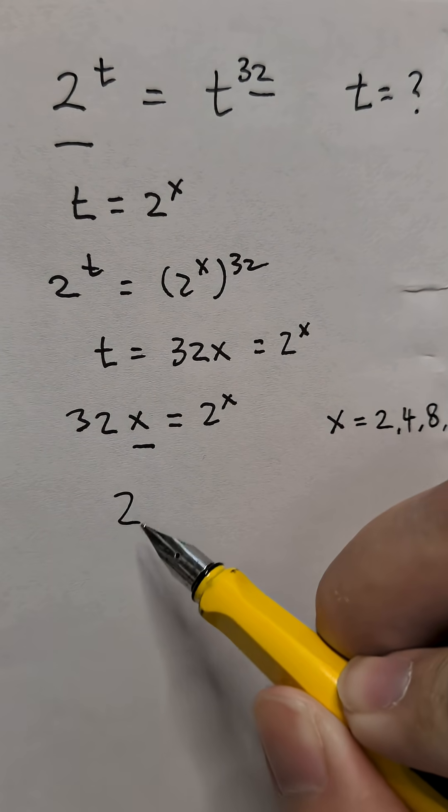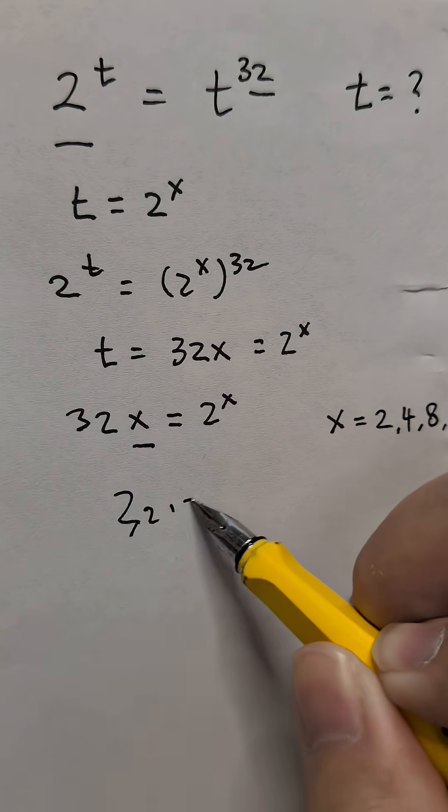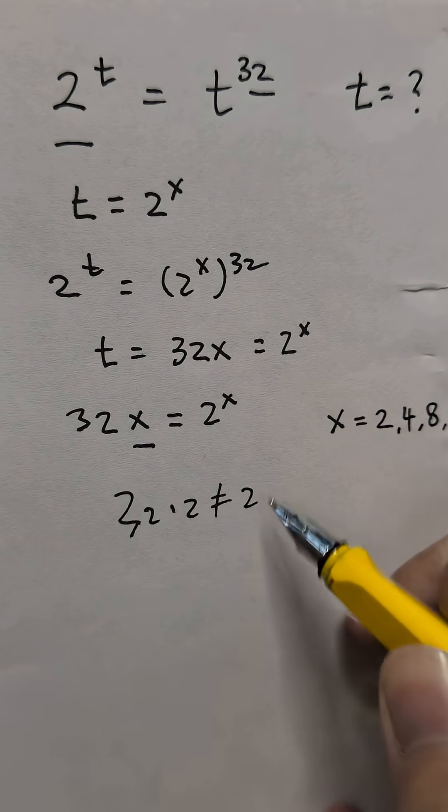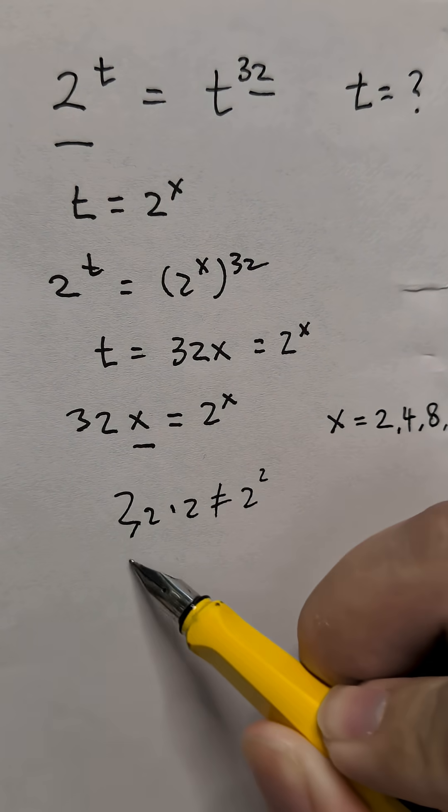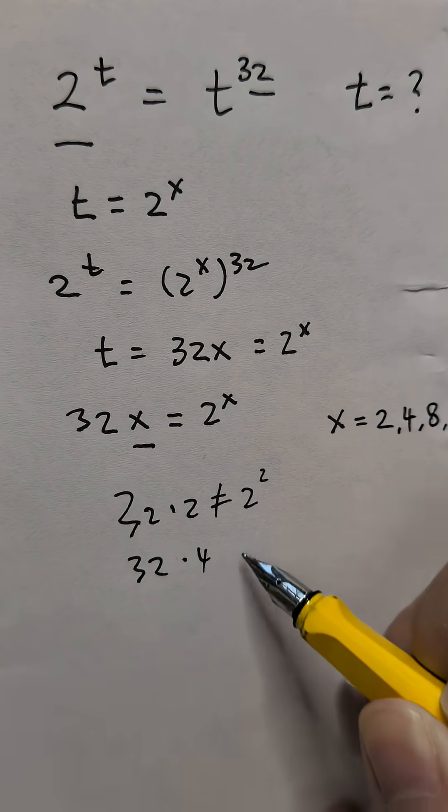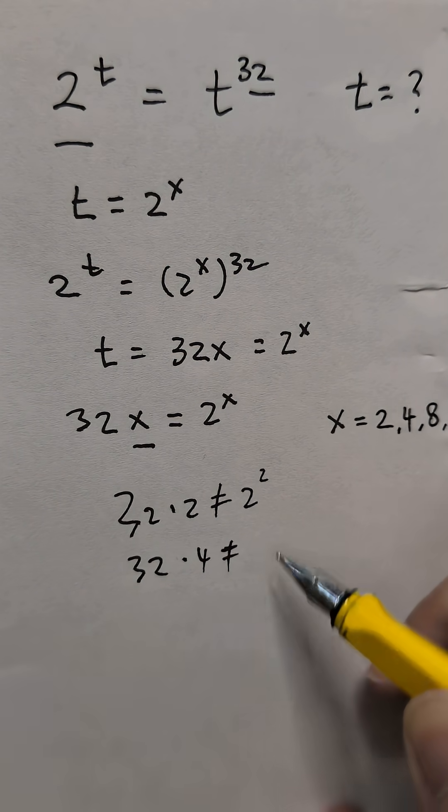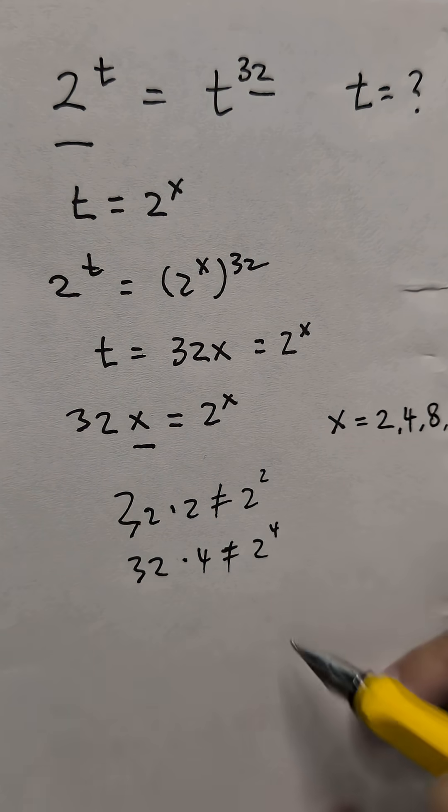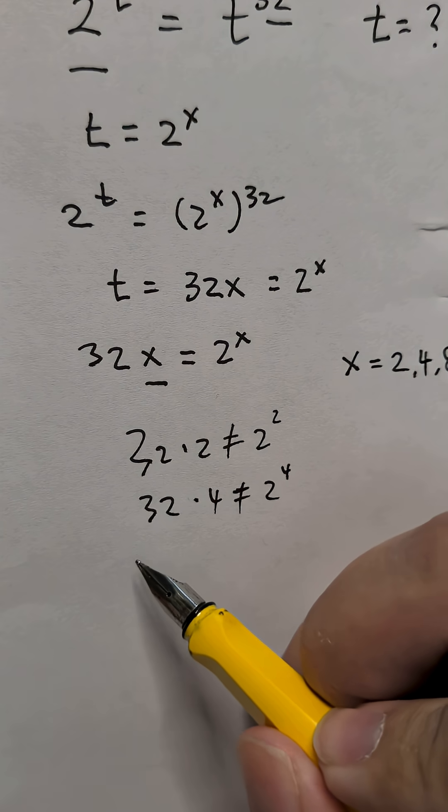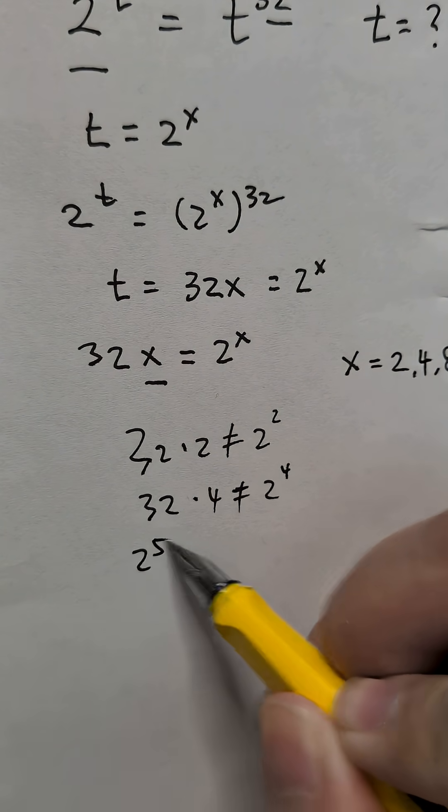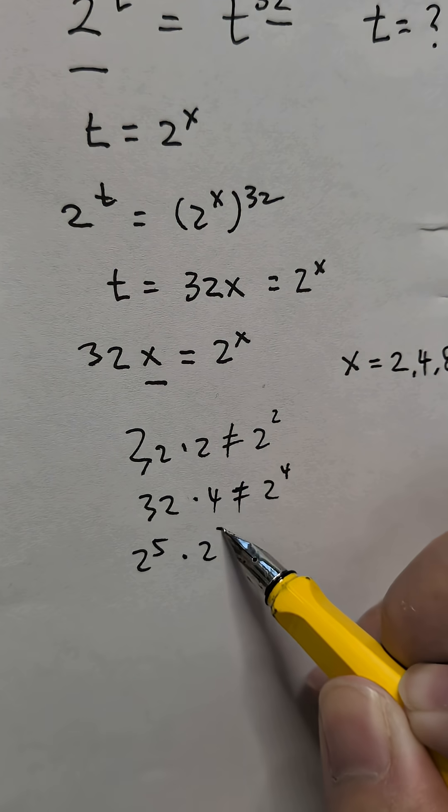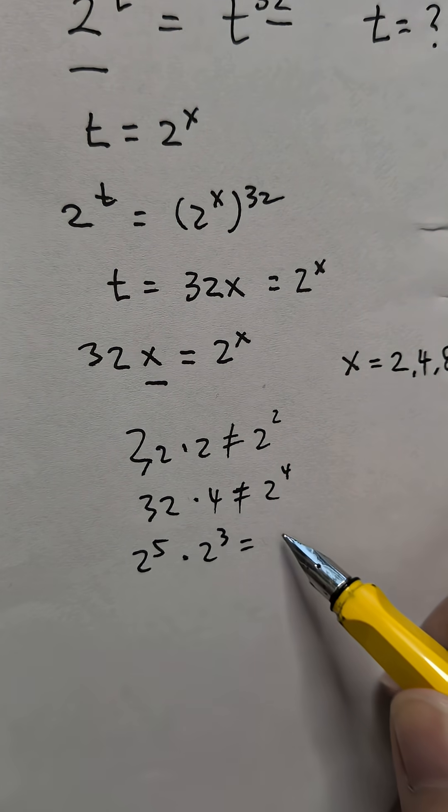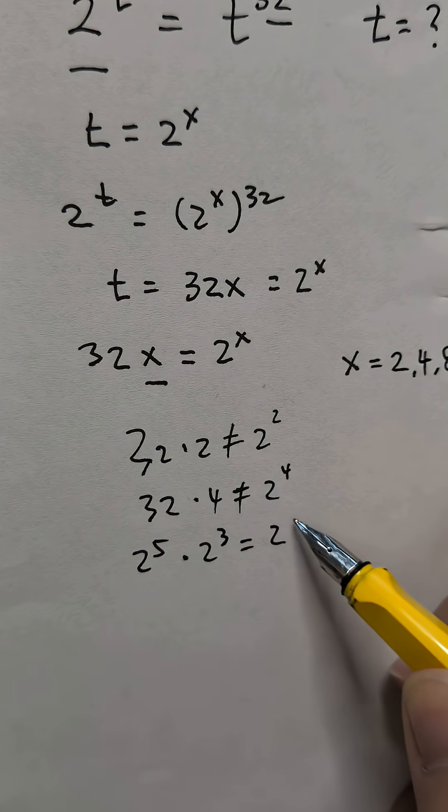So 2, 32 times 2, obviously is not 2 to the power of 2. 32 times 4 is not 2 to the power of 4, that's 16. But 32 times 2 to the power of 3 is indeed 2 to the power of 8. So x here is 8.